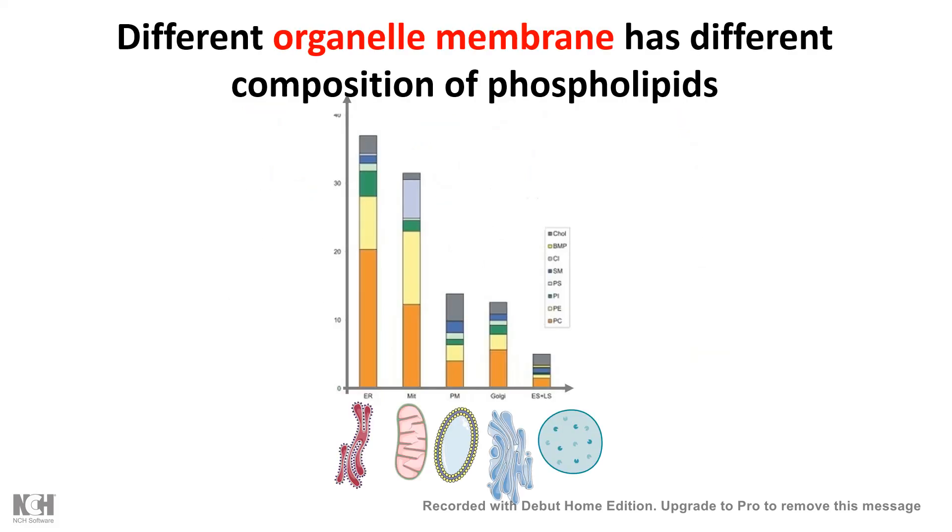Now if we talk about the distribution of phospholipids in different organelles inside the cell, we would see a huge heterogeneity. For example, if we compare ER versus Golgi, the membrane composition would be very different and scientists are still trying to understand what is the significance behind that.